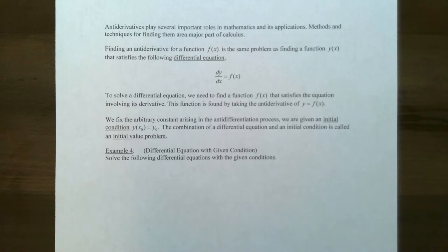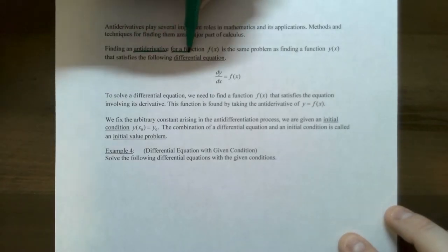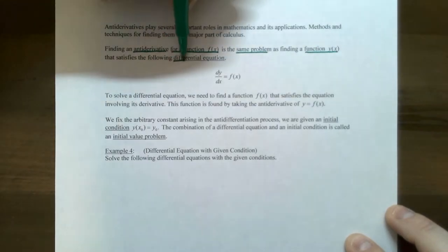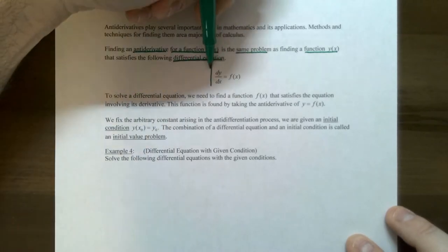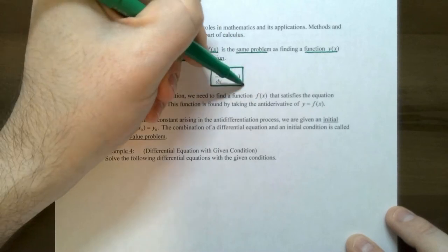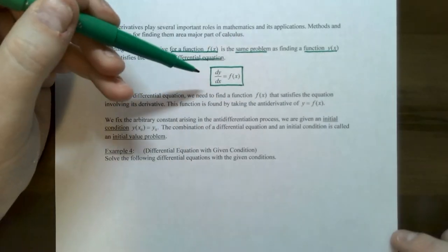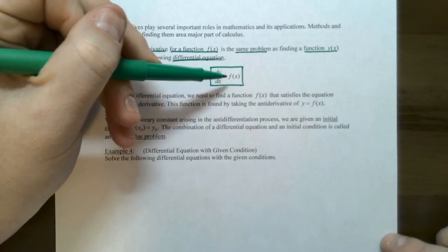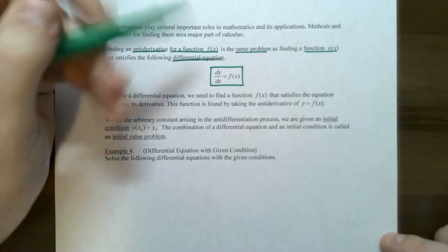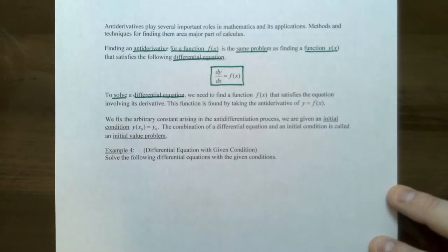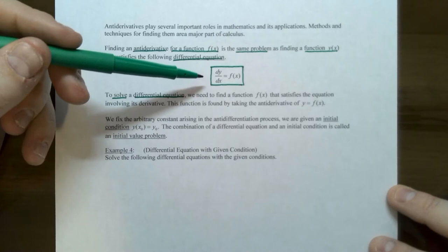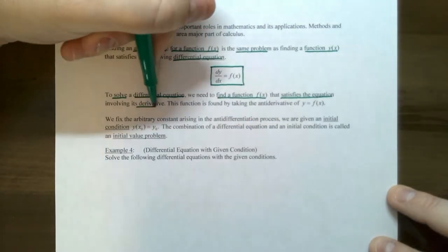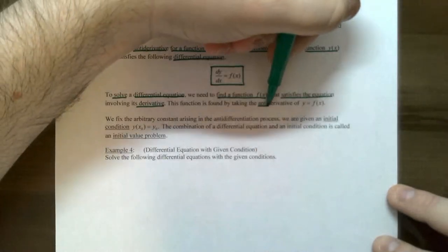Here's the idea: we're going to find an anti-derivative for a function f(x), and it turns out this is the same problem as finding a function F(x) that satisfies a differential equation dy/dx — or equivalently y' = f(x). This is called a differential equation because dy/dx is a derivative, and this is an equation involving a derivative. If the derivative is f(x), what is the original function — which would be the anti-derivative? To solve the differential equation, we need to find a function F(x) that satisfies the equation involving derivatives, and that function is found by finding the anti-derivative. That's the connection with anti-derivatives.